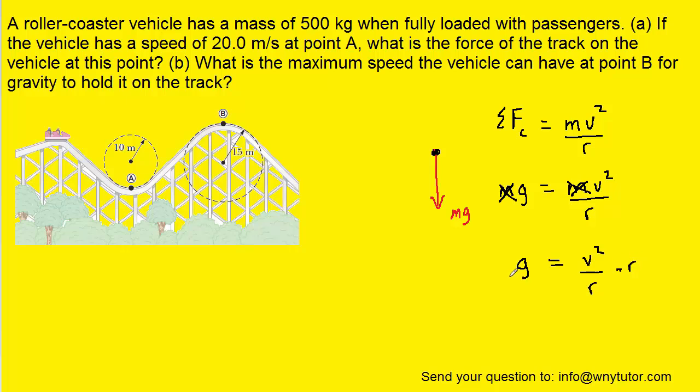We will then multiply both sides of the equation by the radius. And then we will take the square root of both sides of the equation. And then to calculate the speed, we simply have to plug in the radius at point B, which was given in the diagram, as well as 9.8 for g. When we plug in those known values, we get an approximate speed of 12 meters per second at point B.